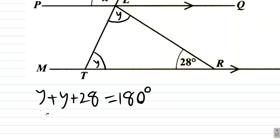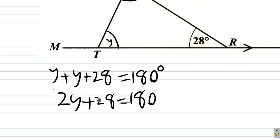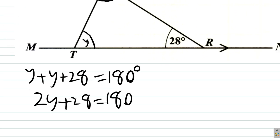Alright. So, Y plus Y is 2Y. 2Y plus 28 equals 180. Alright. What else happens here? 2Y is equal to 180 minus 28. What is 180 minus 28? It can't work. I told you for me. 180 minus 28 is what?